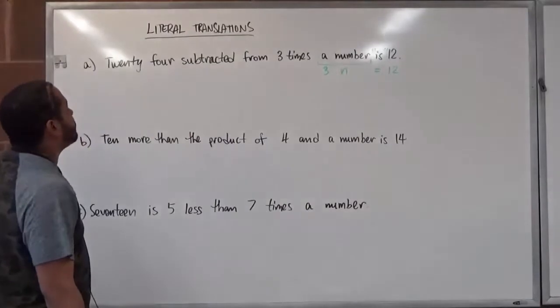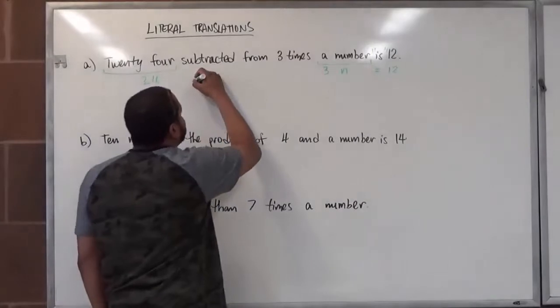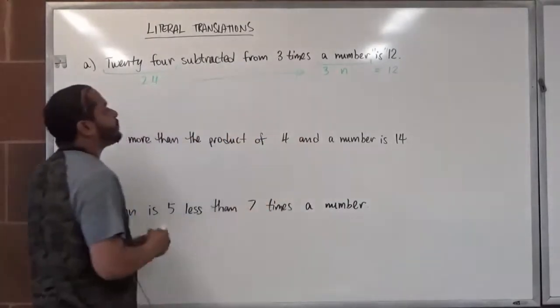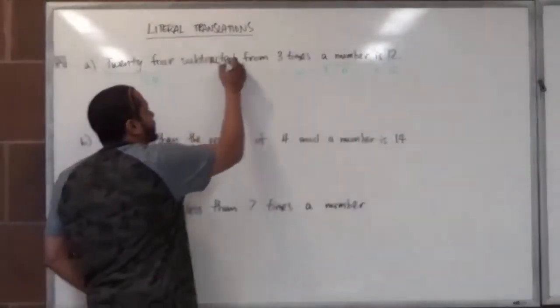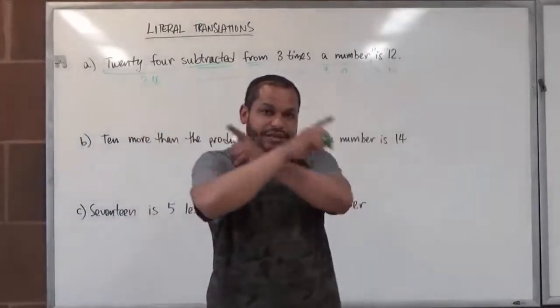The only problem we have here is this value of 24 is going to be subtracted from 3n. And whenever we see the terms 'subtracted from,' it's always going to be a post-operation. So they're going to switch around.